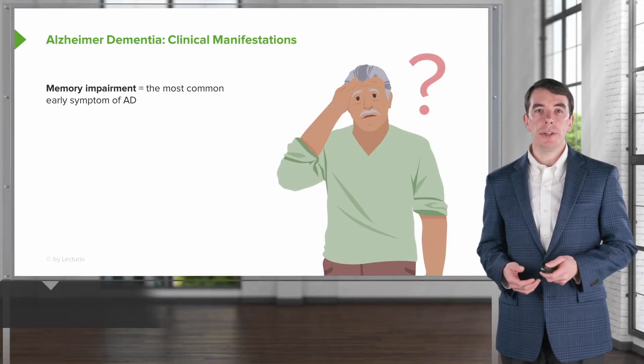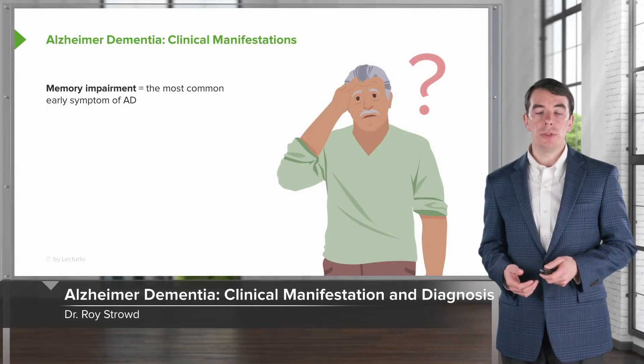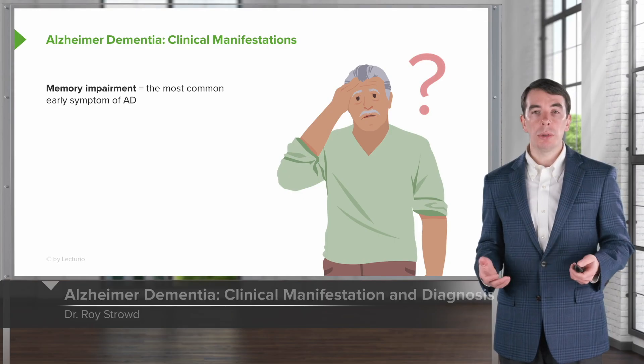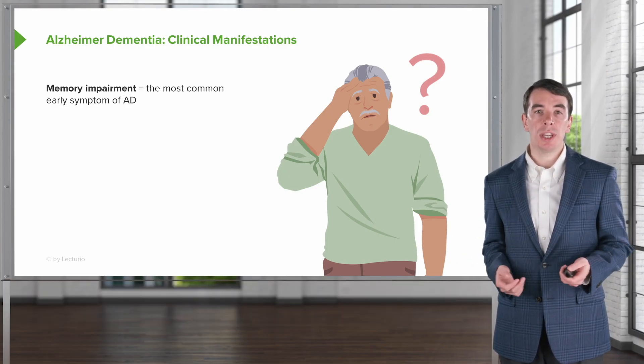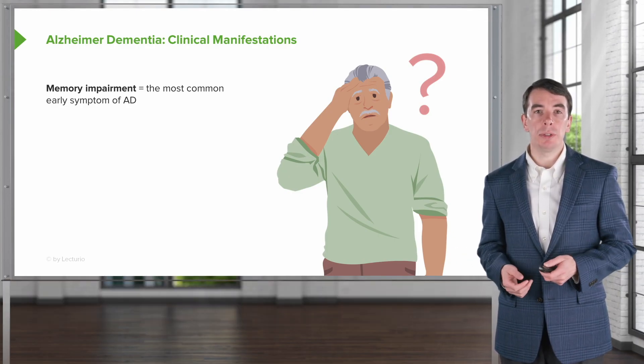Let's talk about some of the clinical manifestations that we see with Alzheimer's disease. Alzheimer's is a disorder of memory impairment, and this is the most common early symptom of Alzheimer's disease.